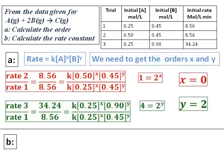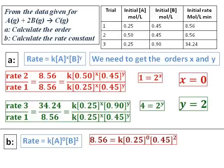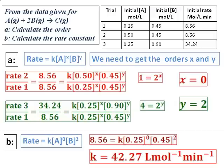To get the value of the rate constant, pick one trial — take trial 1. The rate is written as k[A]⁰[B]², since the order with respect to A is 0 and with respect to B is 2. Substituting the values — concentration of A is 0.25 and concentration of B is 0.45 — and calculating gives k = 42.27 L·mol⁻¹·min⁻¹, which is consistent with a second-order rate law unit for k.